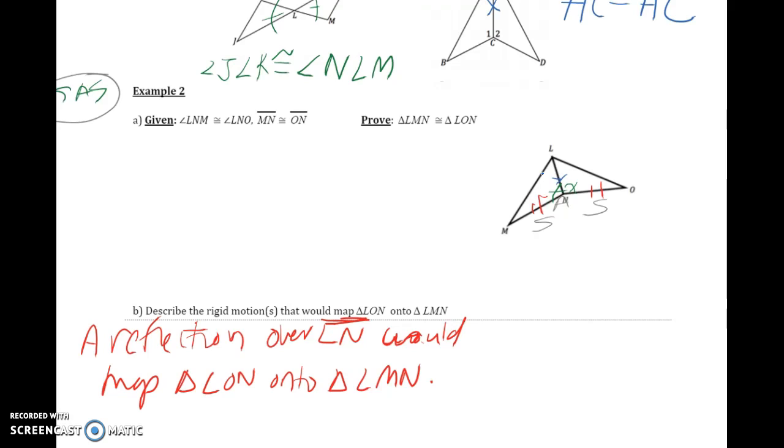Using the flow proof, I like to always start with putting what I need to prove at the bottom. For the flow proof, so that would be triangle LMN is congruent to triangle LON.